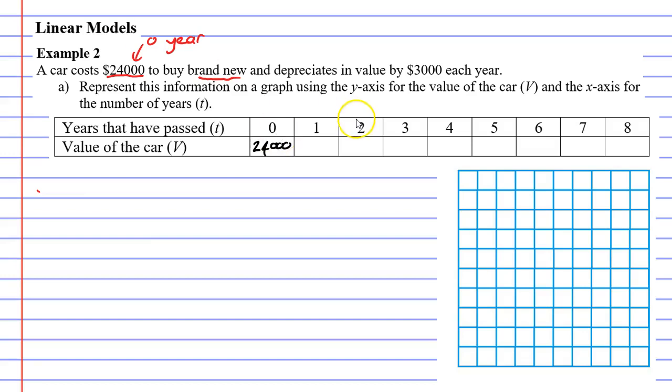Each year, it depreciates or goes down by $3,000. So all we need to do each time is subtract $3,000. So after one year, it's worth $21,000. Then minus 3 grand again, it'll be worth $18,000. Then $15,000. You'll notice that when we get to the 8th year, the car is worth nothing. So there's really no point going any further than that. You're not going to have a car that's worth negative $3,000.